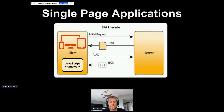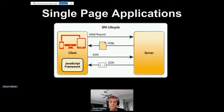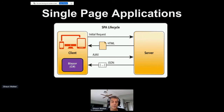A single page application has a distinct client and server model: the browser makes an initial request to the server, gets back the initial payload and markup for the page, and from that point on most interactions happen between the client and the server over Ajax for retrieving additional data. Most display aspects are handled by JavaScript frameworks, but Blazor replaces that with a C-sharp capability that lets you replace a JavaScript framework with an equivalent that runs in C-sharp.